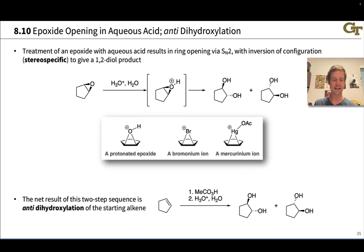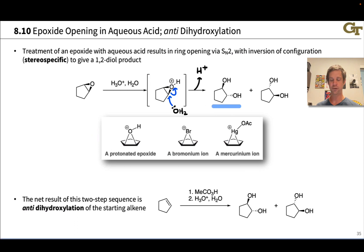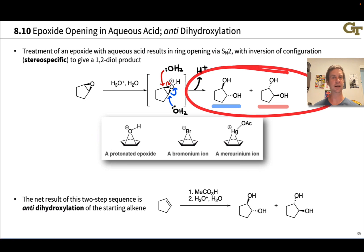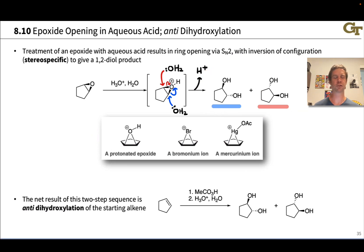Mechanistically, acid protonates the oxygen of the epoxide to give its conjugate acid — just a proton transfer step. Then water opens this much more electrophilic protonated epoxide with inversion of configuration, so the two OH groups end up on opposite sides. As in halogenation, this SN2 attack can occur at either electrophilic carbon, leading to two enantiomers, and we would expect a racemic mixture.